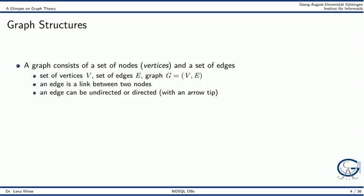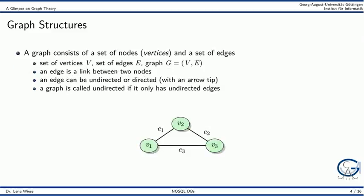An edge is a link between two nodes. An edge can either be undirected, or it can have a direction, which is denoted by an arrow tip. Here we see an example of an undirected graph — a graph is called undirected if it only has undirected edges. Here we see an example of a directed graph, or digraph for short, which only has directed edges.